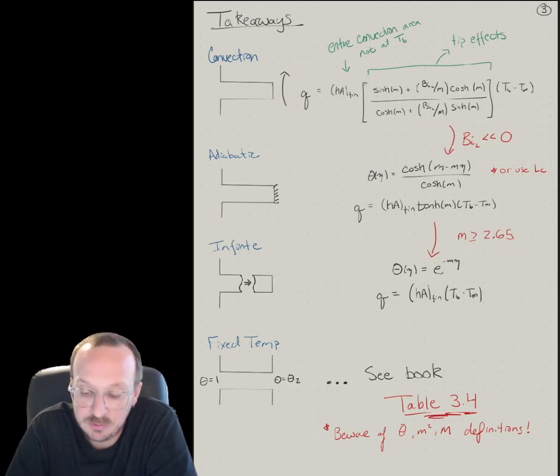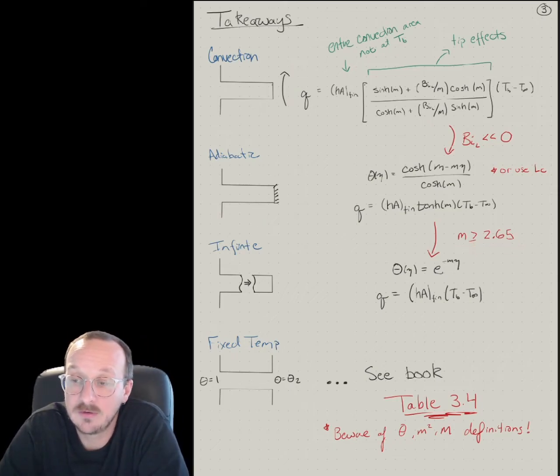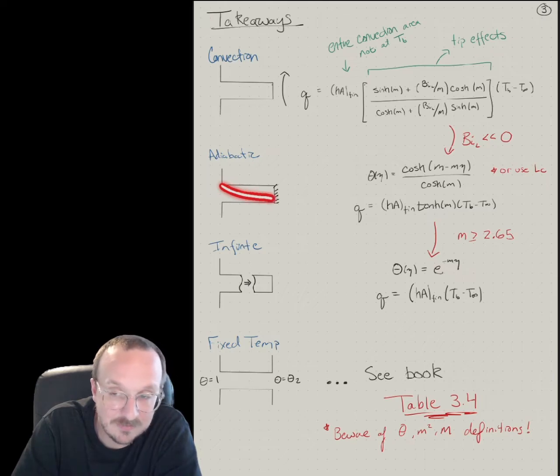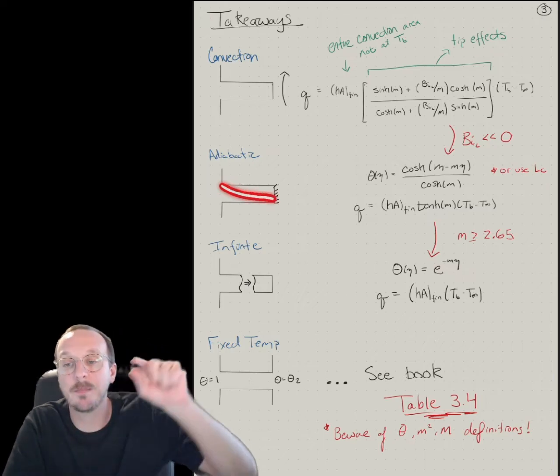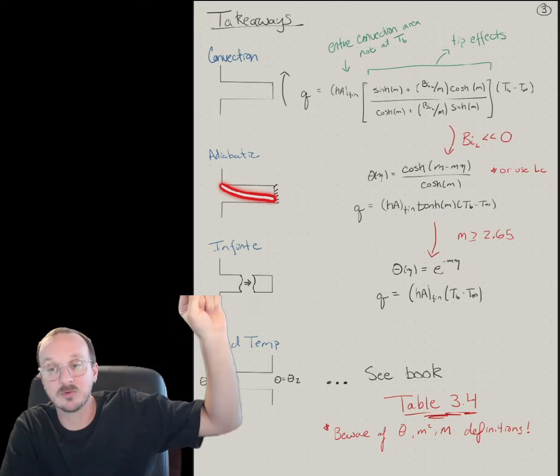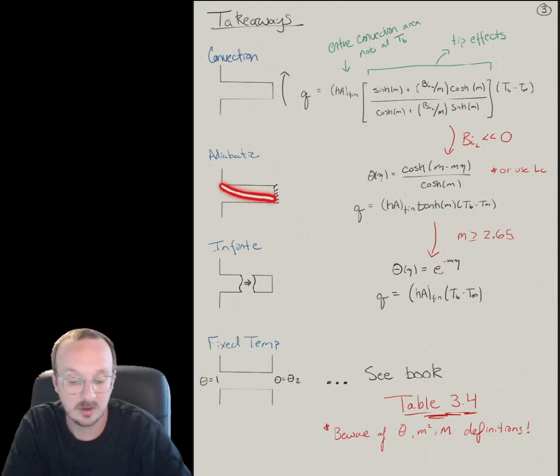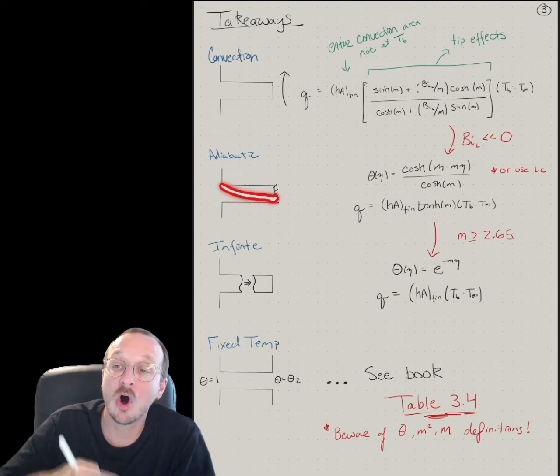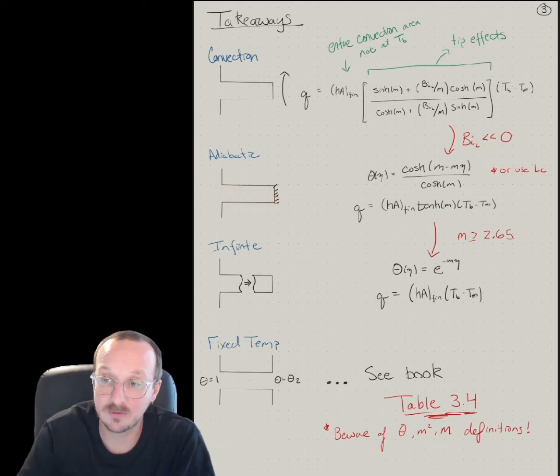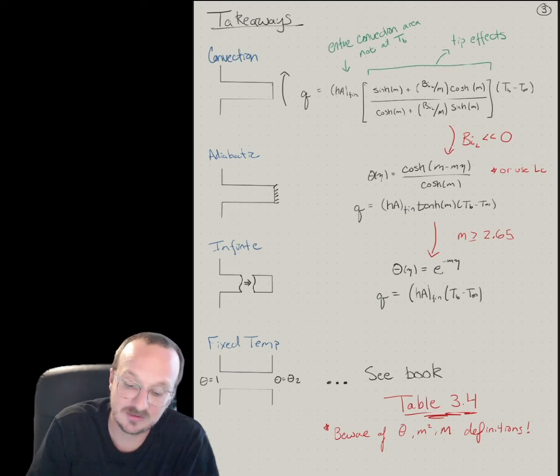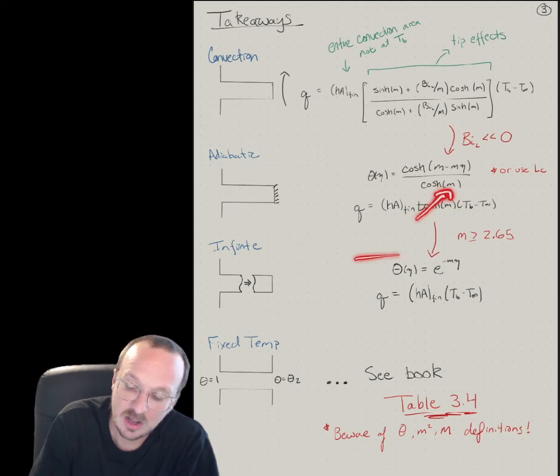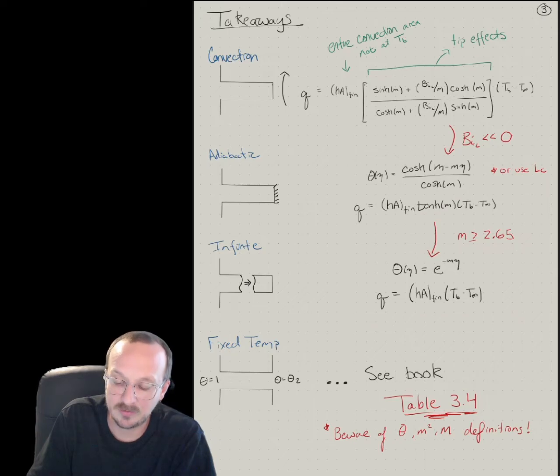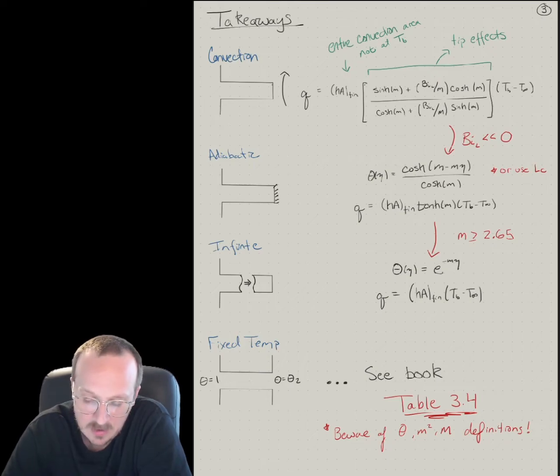Now, if you compute the value of M for your fin, if M equals 2.65, it means that your temperature drop is perfect across your fin. And it basically goes from theta equals one to theta equals zero at the tip. And so that means that any longer would make no difference to heat transfer. So for M greater than 2.65, if you kept adding length to it, it's an infinite fin. So if M is greater than 2.65, hyperbolic tangent goes away. And now we've got a very simple exponential decay for the temperature profile.